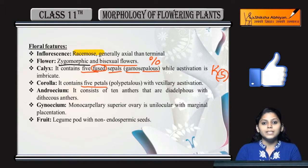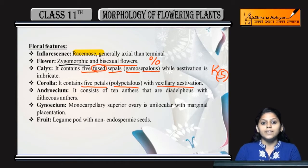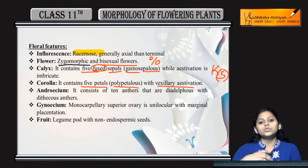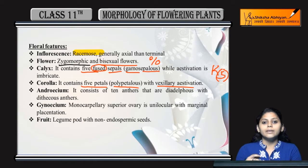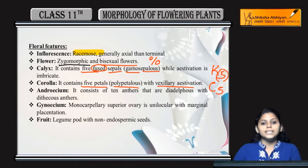Corolla: five petals are present and they are polypetalous, meaning freely arranged. Estivation is vexillary. Vexillary estivation is descending imbricate, in which the posterior petal is large, with two petals inside it, and then two more fused petals inside those. This is denoted by C, and five for polypetalous free petals.